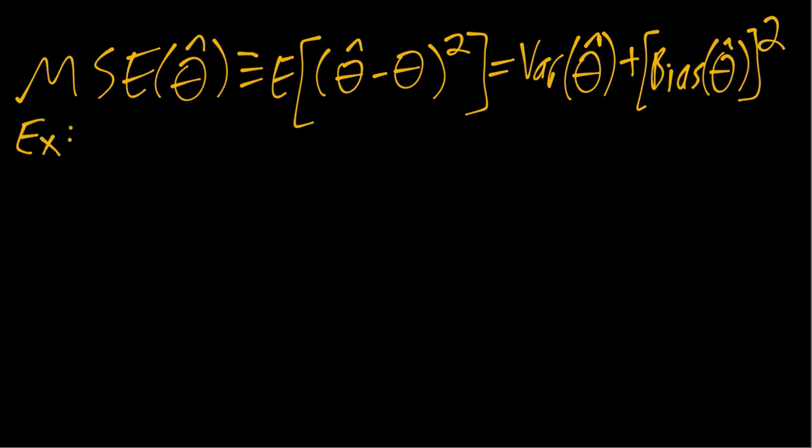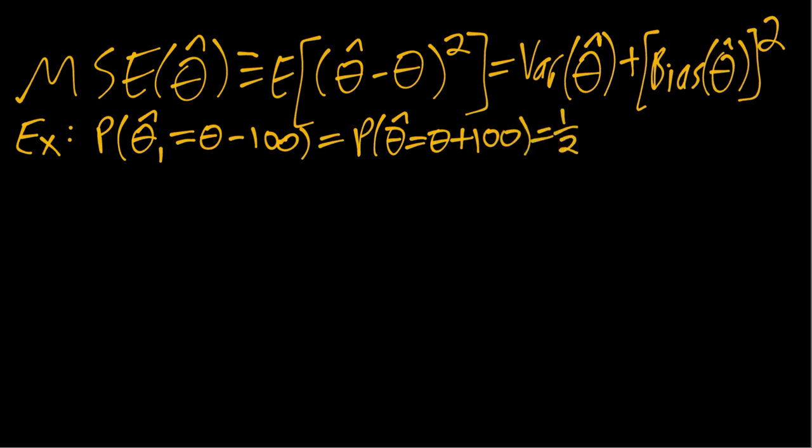So first we will imagine there's two estimators, theta hat one and theta hat two. So the first estimator has a somewhat unusual distribution, but it makes it easy to do the math, where it's equally likely to be 100 below theta, as 100 above theta. Those are both one half probability.